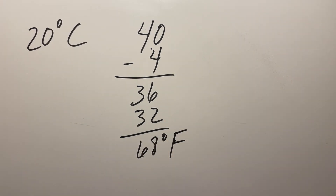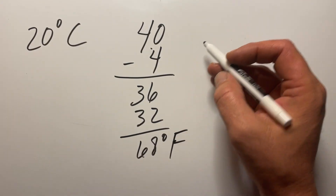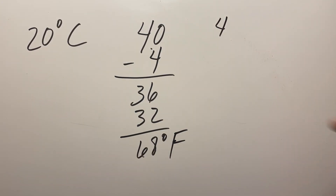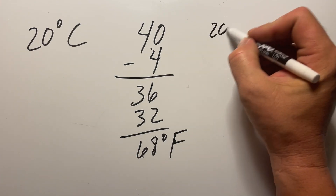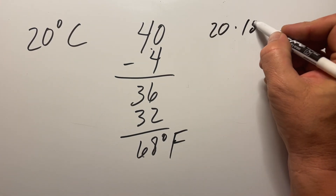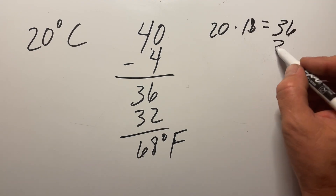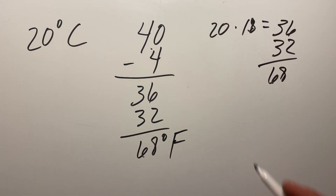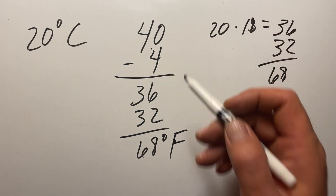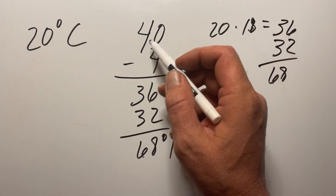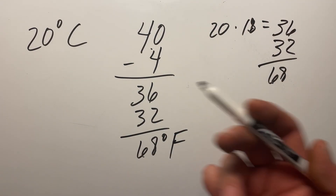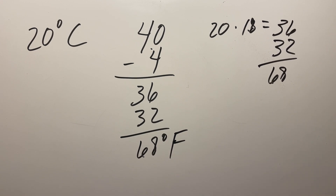This is the same thing — just a way to simplify the math so it's easier to do in your head. You can arrive at the same answer by taking 20 and multiplying it by 1.8, which also gives you 36, and then adding 32 to get 68. But it's a little tougher to do that in your head. I find it easier to just double it, move over one decimal place, and subtract that number.